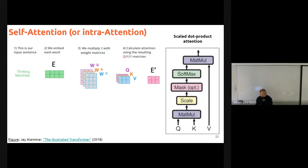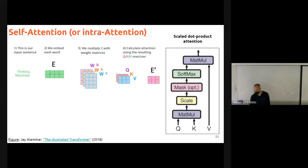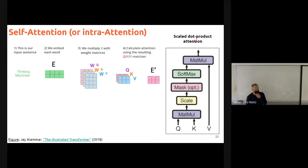All this process is normally described in the papers as 'scaled dot-product attention.' When you see this scheme, it refers to all this process that we went through.